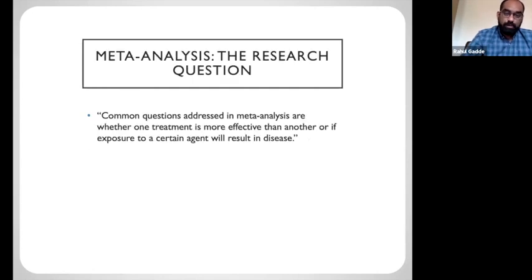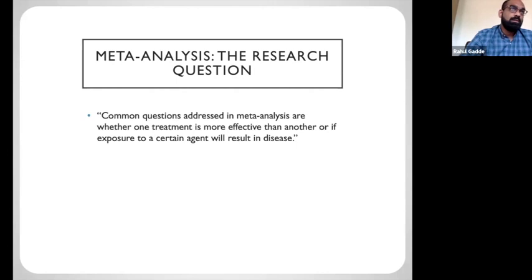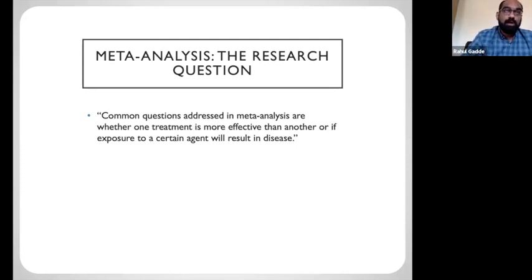For example, when comparing treatments, you could compare whether aspirin or clopidogrel is better in a TIA. When assessing exposure to a certain agent, even though we know smoking causes lung cancer, hypothetically if you had 10 studies, you could pool the results to say: among smokers versus non-smokers, who is at a higher risk of developing lung cancer? Performing the literature search is the critical and most difficult step in the meta-analysis, because you need to find all relevant studies so they can be pooled to give a true estimate of the effect you're investigating.